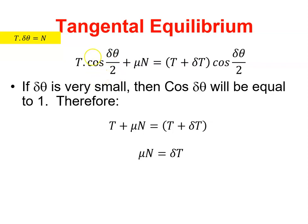So therefore, this disappears, and I just get T plus μN. And this disappears, and I just get T plus DT. And then the two Ts cancel out, and I get μN is equal to DT.